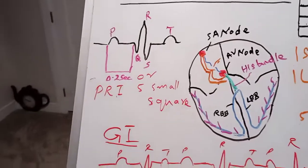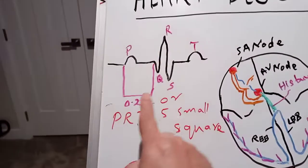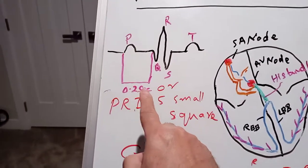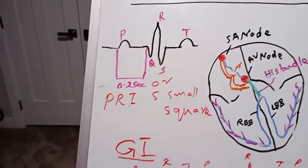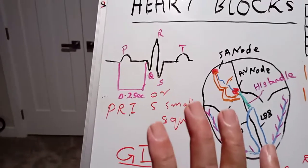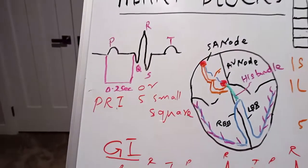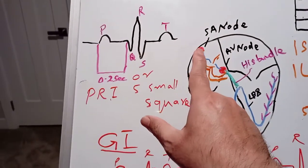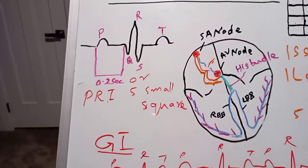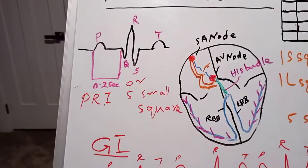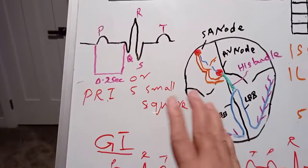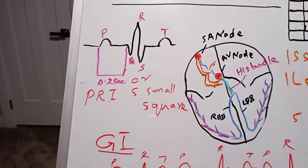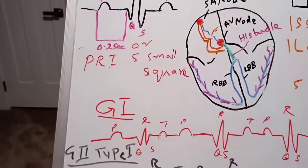There is an important interval called the PR interval — from the beginning of the P to the beginning of the R. Normally this is 0.2 seconds, equal to 5 small squares. In heart blocks it takes more time to pass from the SA node through the AV node and into the ventricle. When there is a delay, the PR interval will increase beyond 5 small squares, and that is what is known as a heart block.